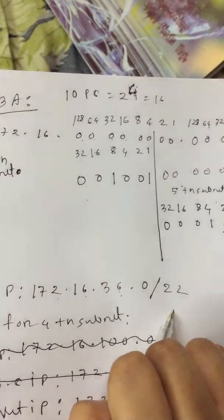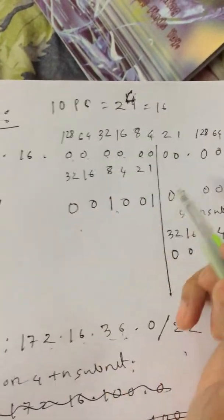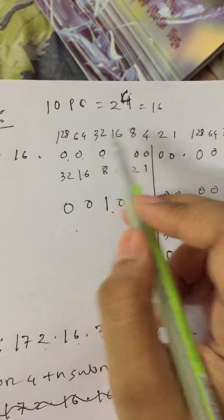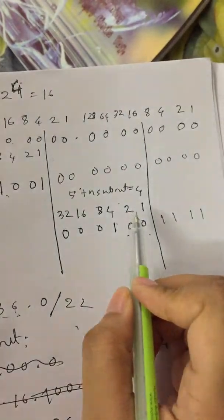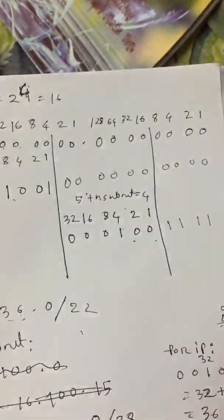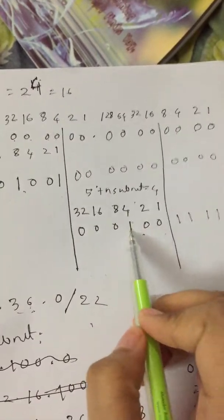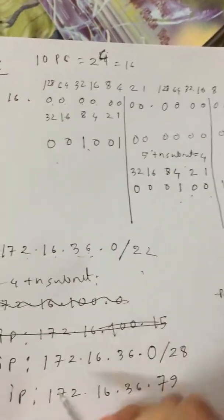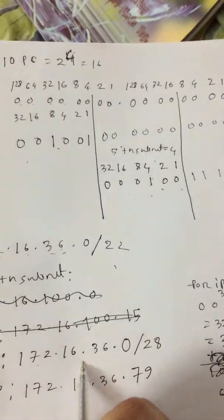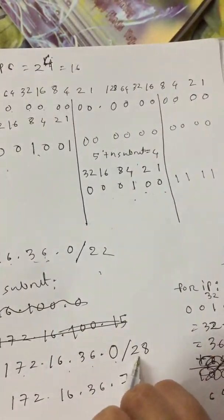For 10 subnets, the IP is 172.16.36.0/22. It's /22 because 8 plus 8 and this 6 means total is 22. Then 36, how it becomes 36? Like 32 plus 4 equals 36.